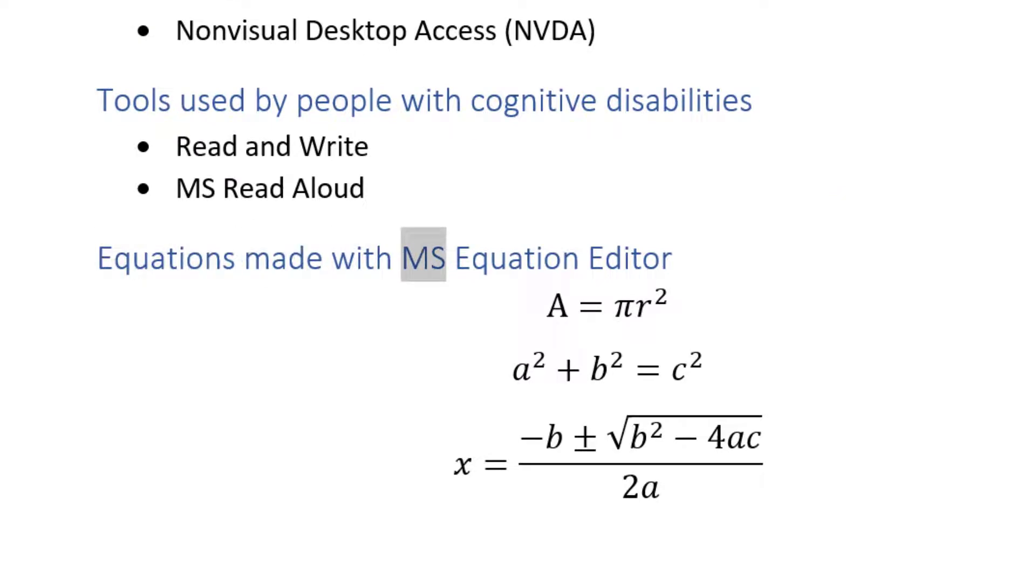Equations made with MS Equation Editor. A equals pi r squared. A squared plus b squared equals c squared. x equals numerator, minus b plus or minus square root of b squared minus 4ac end square root, end numerator, over 2a.